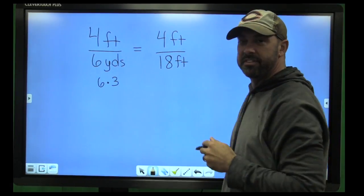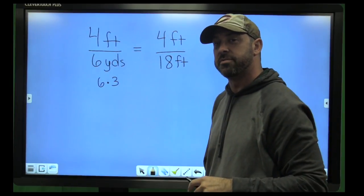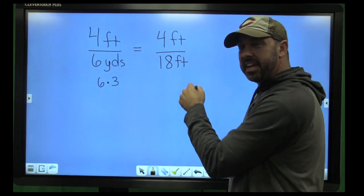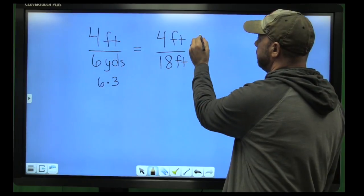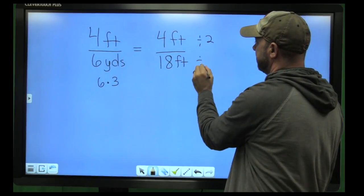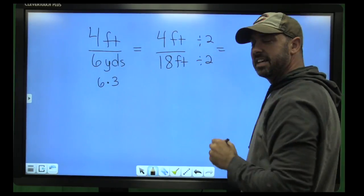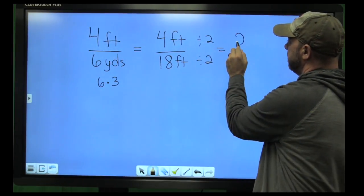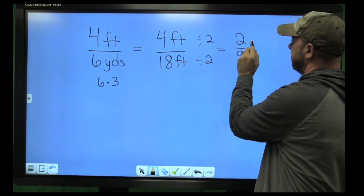Now that they're both in feet, we can put it in its simplest form. They are both even, so we can divide them by two each, which gives us an equivalent ratio in simplest form of two ninths.